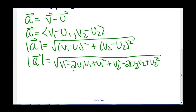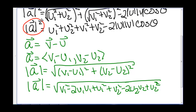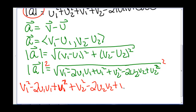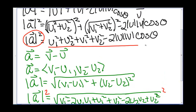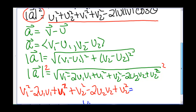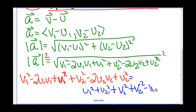Squaring both sides, the length of a squared equals v₁² - 2u₁v₁ + u₁² + v₂² - 2u₂v₂ + u₂², and that equals u₁² + u₂² + v₁² + v₂² minus 2 times the length of u times the length of v times cosine theta.